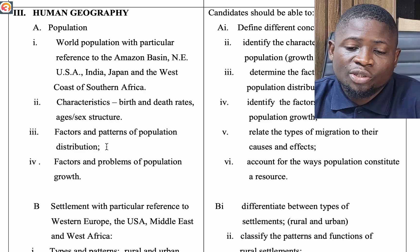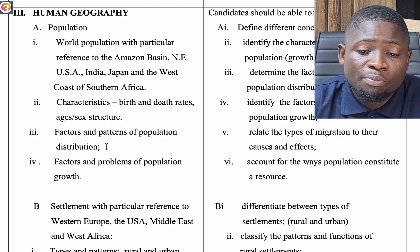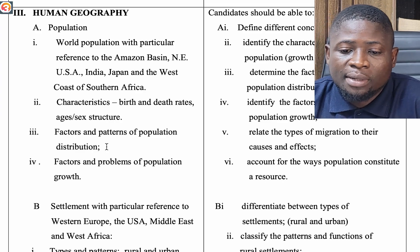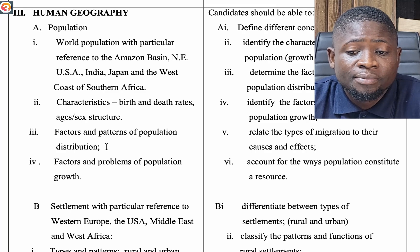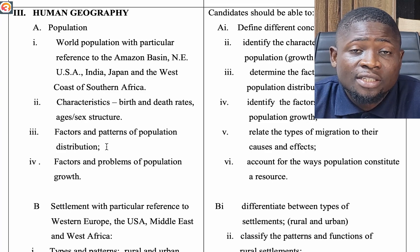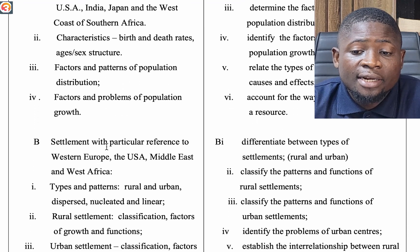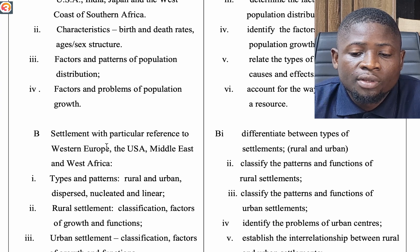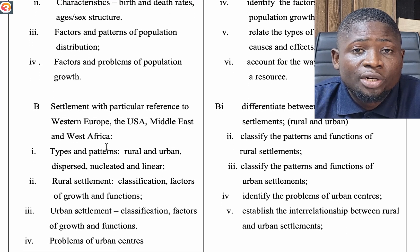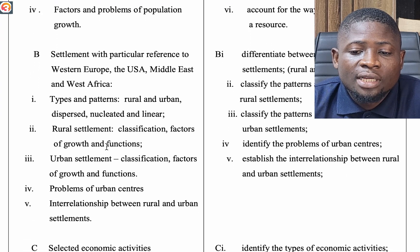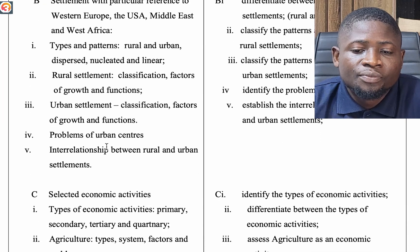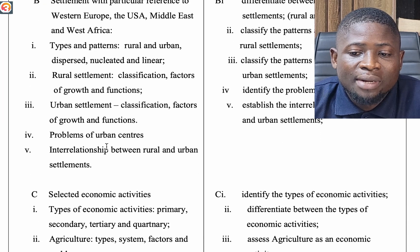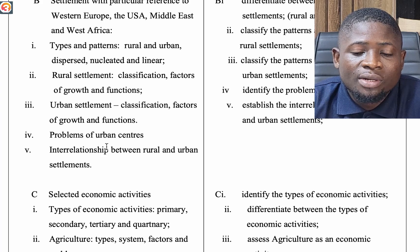The third topic is Human Geography, starting with population. We look at world population with particular reference to the Amazon Basin, northeast United States of America, India, Japan, and the west coast of southern Africa. We discuss the distribution of local population, health factors, patterns of population, population movements, population distribution, factors and problems of population growth. Then settlements, with particular reference to Western Europe, the USA, the Middle East, and West Africa.